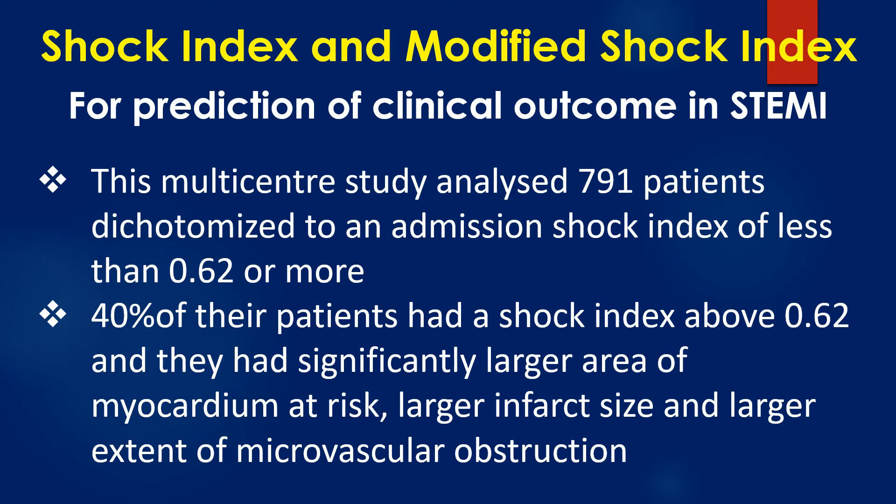This multicenter study analysed 791 patients dichotomised to an admission shock index of less than 0.62 or more. 40% of their patients had a shock index above 0.62, and they had significantly larger area of myocardium at risk, larger infarct size, and larger extent of microvascular obstruction.